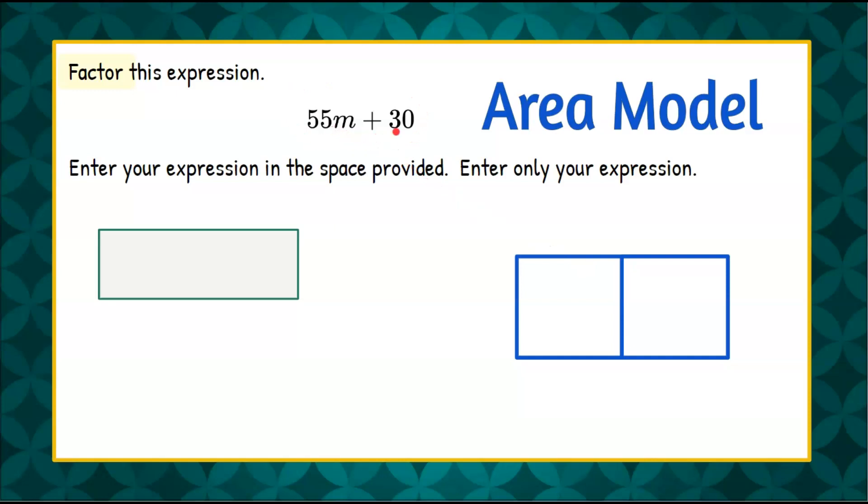So we're going to take this expression, each term, and bring it down into a cell in the table. So 55m + 30. So all I've done is transfer my algebraic expression, one term in each box. So I have a rectangle here.